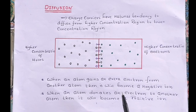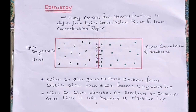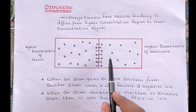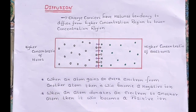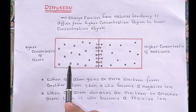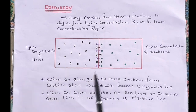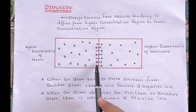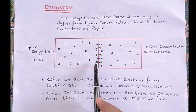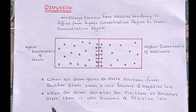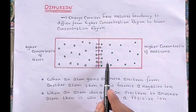The n-side has excess number of electrons, so these electrons diffuse from higher concentration region to lower concentration region — meaning electrons move from n-side to p-side. Similarly, the p-side has excess number of holes, so these holes diffuse from p-side to n-side. As a result, these electrons and holes get recombined.